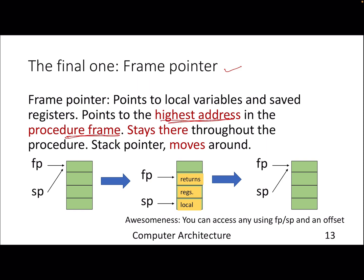To help with this situation, we have something called a frame pointer — an additional register that points to the highest address of a function call or procedure frame. Initially the frame pointer and stack pointer both point to a particular location, and after the procedure starts, SP becomes SP minus 4. The frame pointer stores the highest address — remember, we grow downwards so the highest address is at the top — and this pointer stays there throughout the procedure.